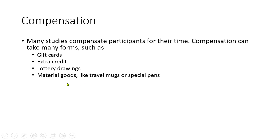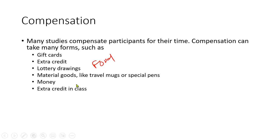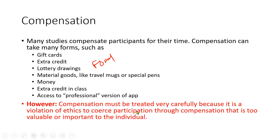Material goods like travel mugs or special pens, food, extra credit, access to the professional version of an app — like free access to YouTube premium or similar. Those are the kinds of compensations. But we have to be very careful because ethical laws say we can't offer compensation so great that someone is coerced into participating when they otherwise might not.